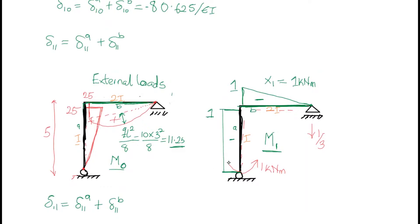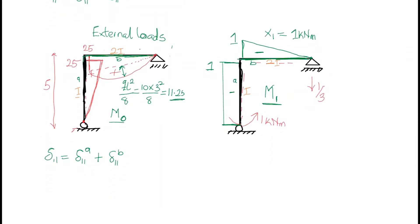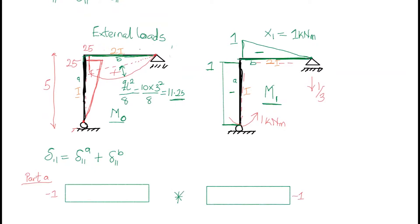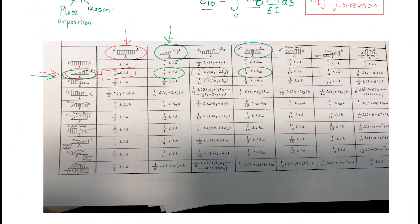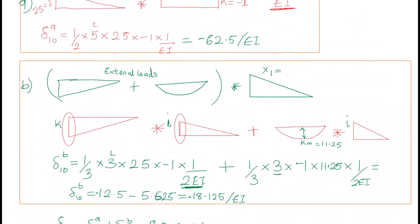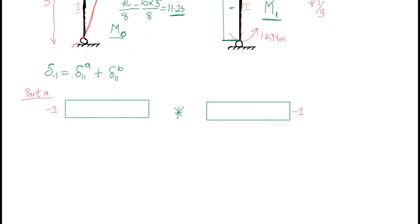For part a we notice that we have a constant moment diagram, so we're going to multiply a constant moment by a constant moment. Let me draw it out here. Going back to the table, a constant times a constant moment gives us L times i times k. Applying that formula to part a: we have 5 times i times negative 1 times negative 1 times 1 over EI, which gives us 5 over EI.